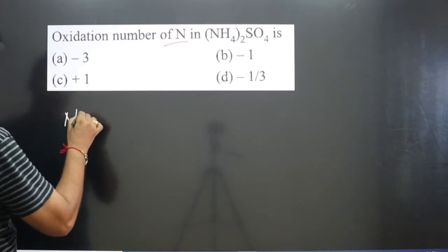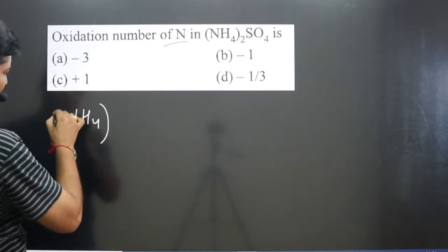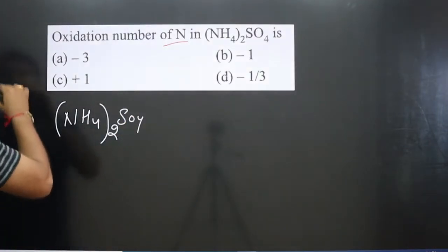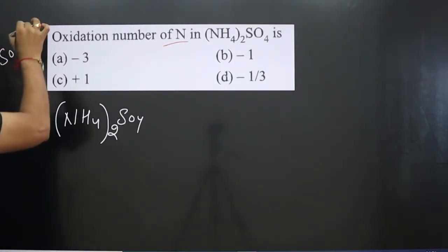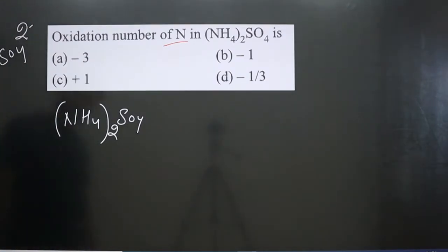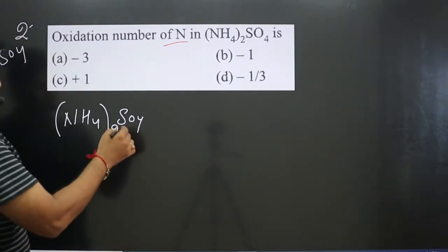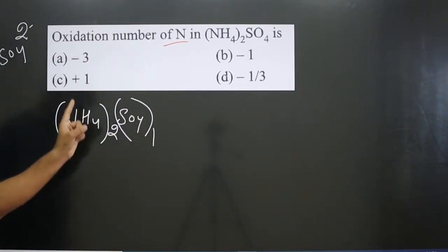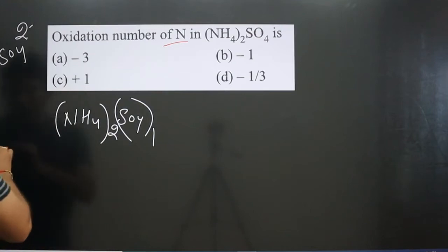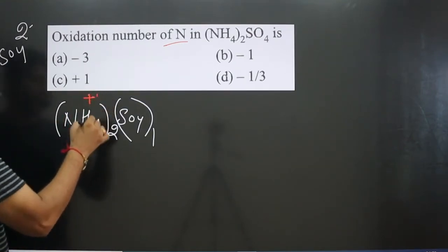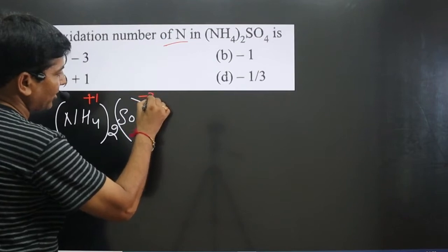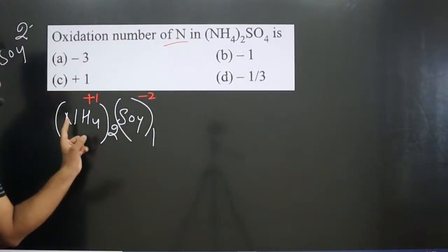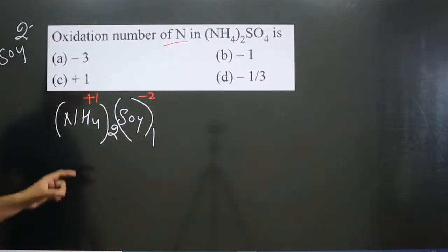This is ammonium sulfate: (NH4)2SO4. In the case of sulfate, we have learned that the sulfate ion has a minus two charge. Only one sulfate ion is given here. Now we can use the crisscross method — one will go on the left side and is always positive, and two will go on the right side and is always negative.